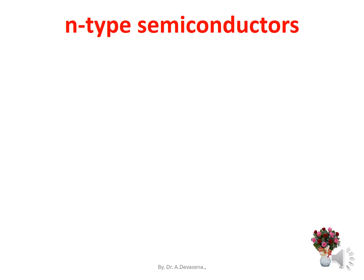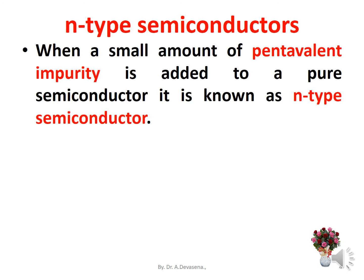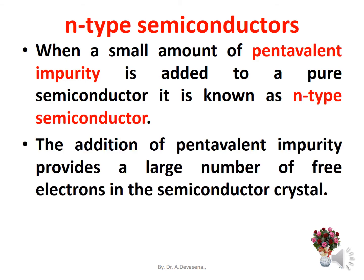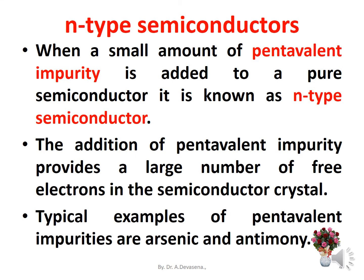N-type semiconductors: When a small amount of pentavalent impurity is added to a pure semiconductor, it is known as an N-type semiconductor. The addition of pentavalent impurity provides a large number of free electrons in the semiconductor crystal. Typical examples of pentavalent impurities are arsenic and antimony.